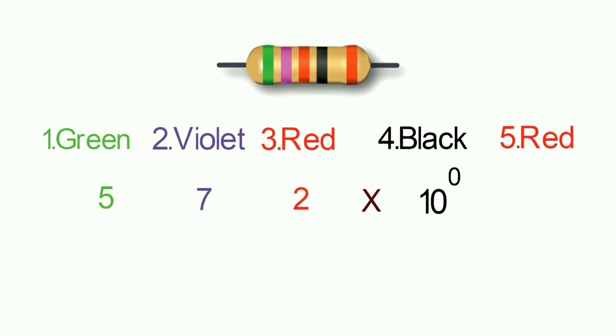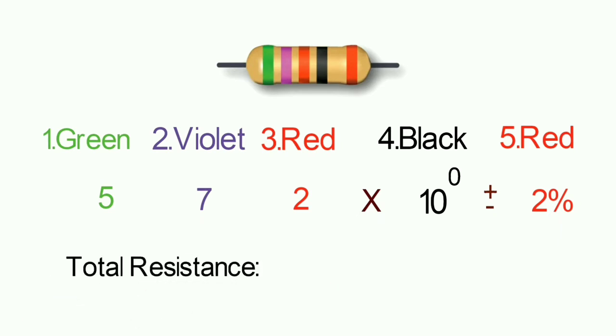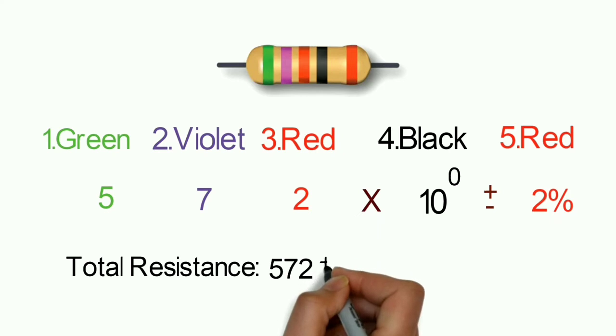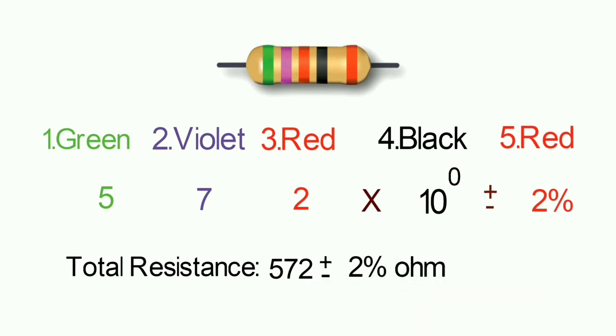For a 5-band resistor example: the bands give digits 5, 7, 2 with a multiplier of 10 raised to 0, giving a value of 572 ohms, plus or minus 2% tolerance. That is 572 ± 2 ohms. This is a 6-band resistor where the last band represents the temperature coefficient.